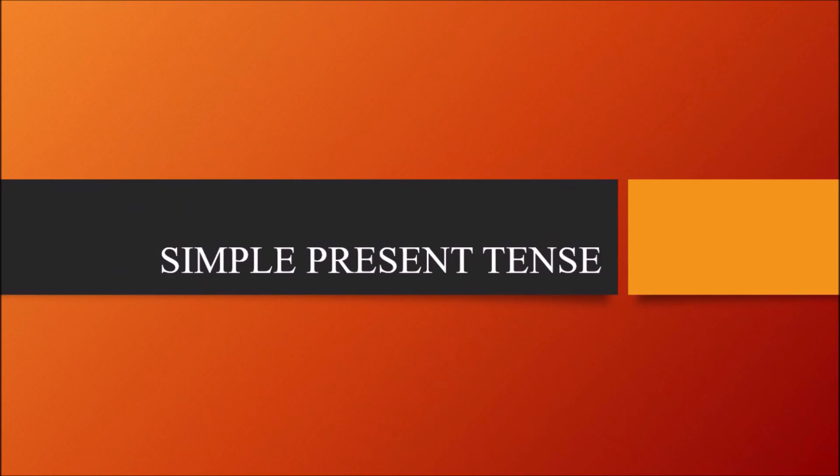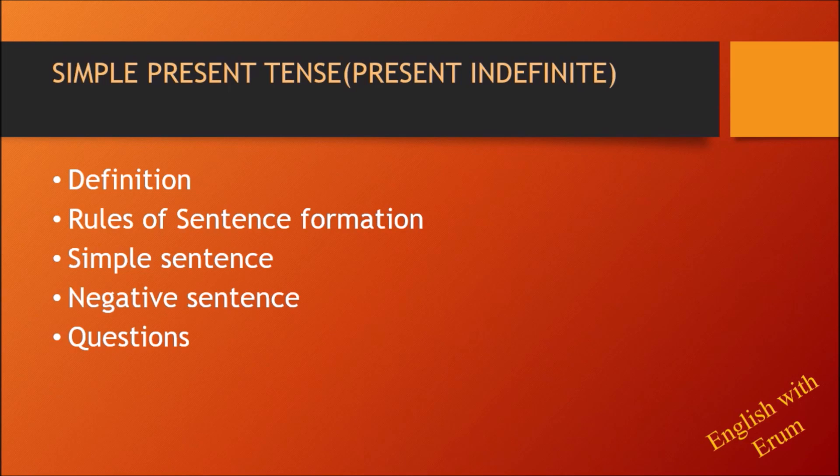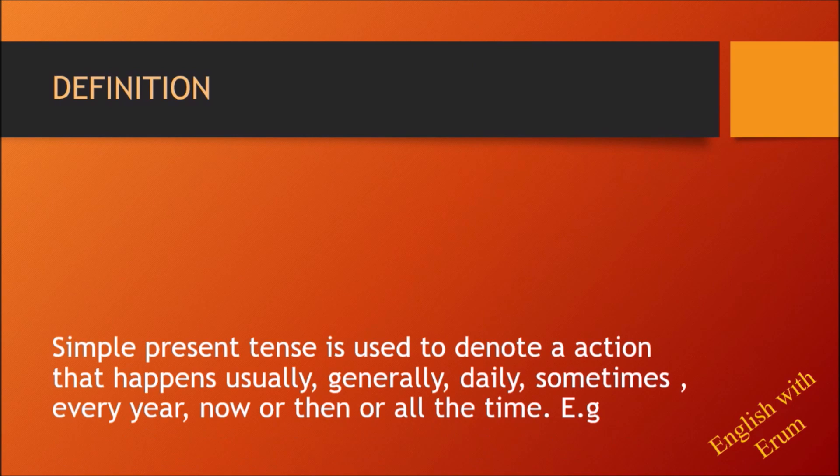We mostly hear the name 'present indefinite tense' but the better name is simple present tense. Today I will tell you about simple present tense — its definition and the rules of sentence formation. Sentences are of three kinds: simple, negative, and interrogative. We will discuss those three kinds of rules today.